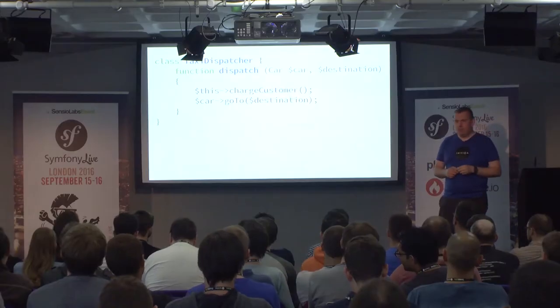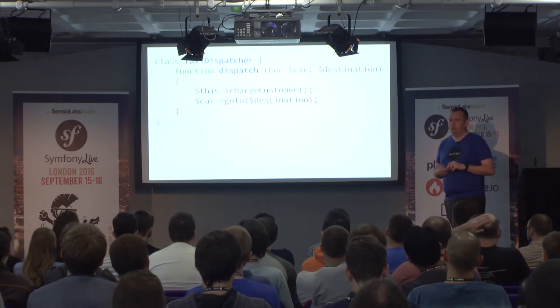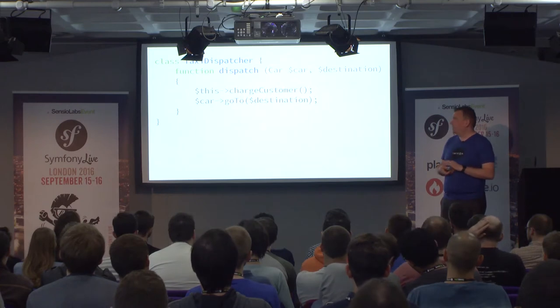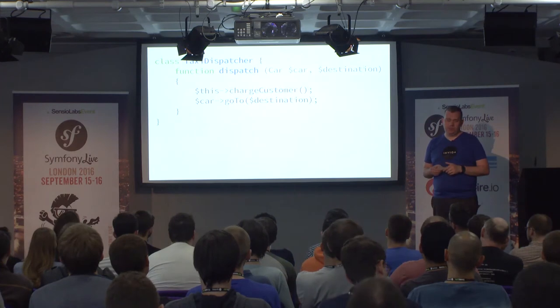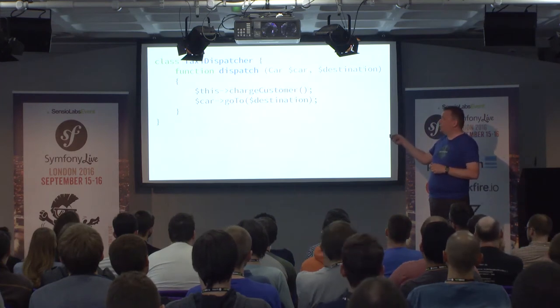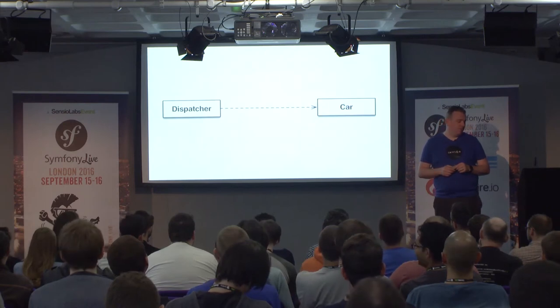So I'd like to talk next about different decoupling techniques, and also a few different places where it is important to decouple. This bit might be obvious to some of you. This is an example of a hard dependency. I'm building Uber or something like it, and I need to be able to send the car to a destination and also charge the customer. So it's a very simple service — we have a concrete dependency here on a car class.